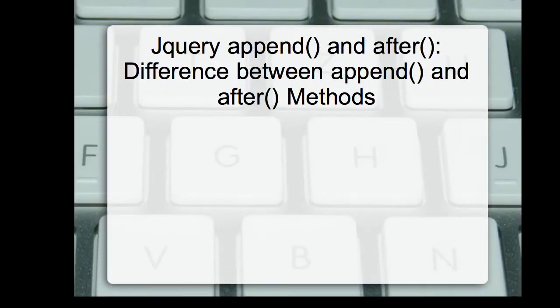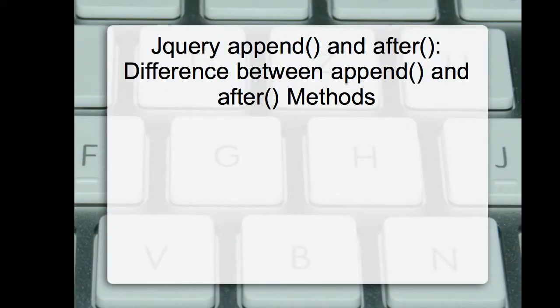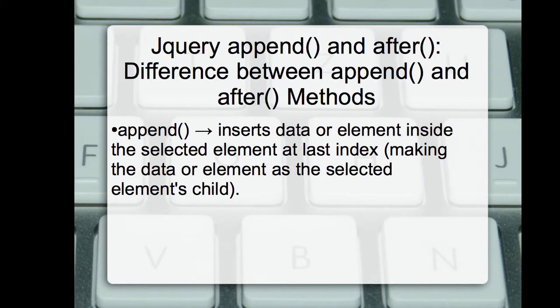Do you know the difference between the append and after methods in jQuery? The append method inserts data or element inside the selected element at the last index. Hence, the new element or the data will become the child of the selected element.